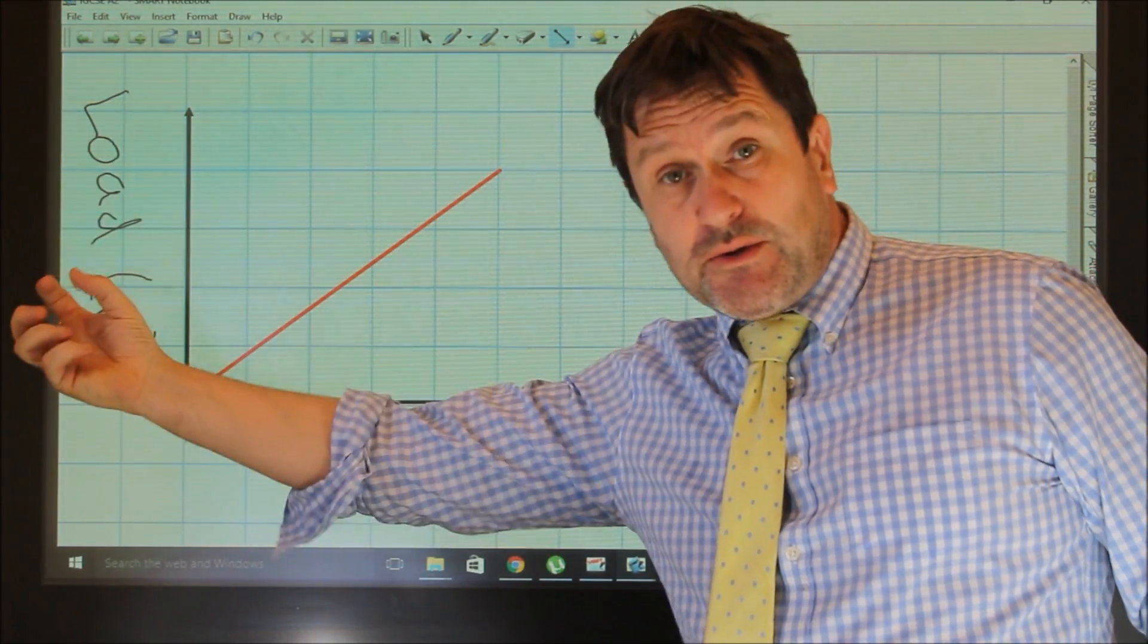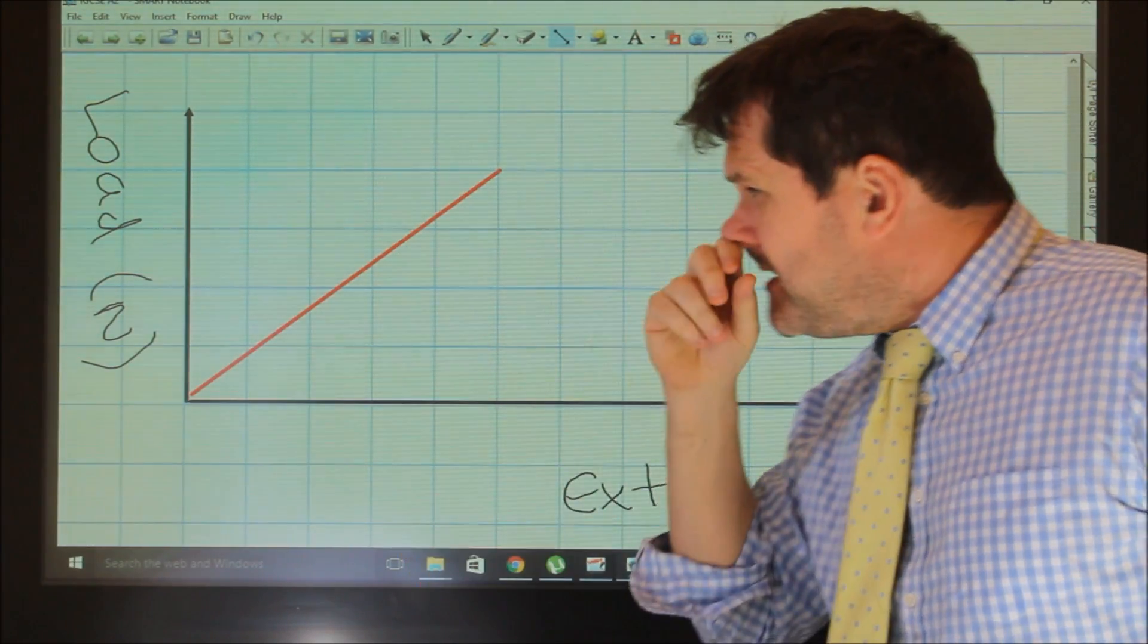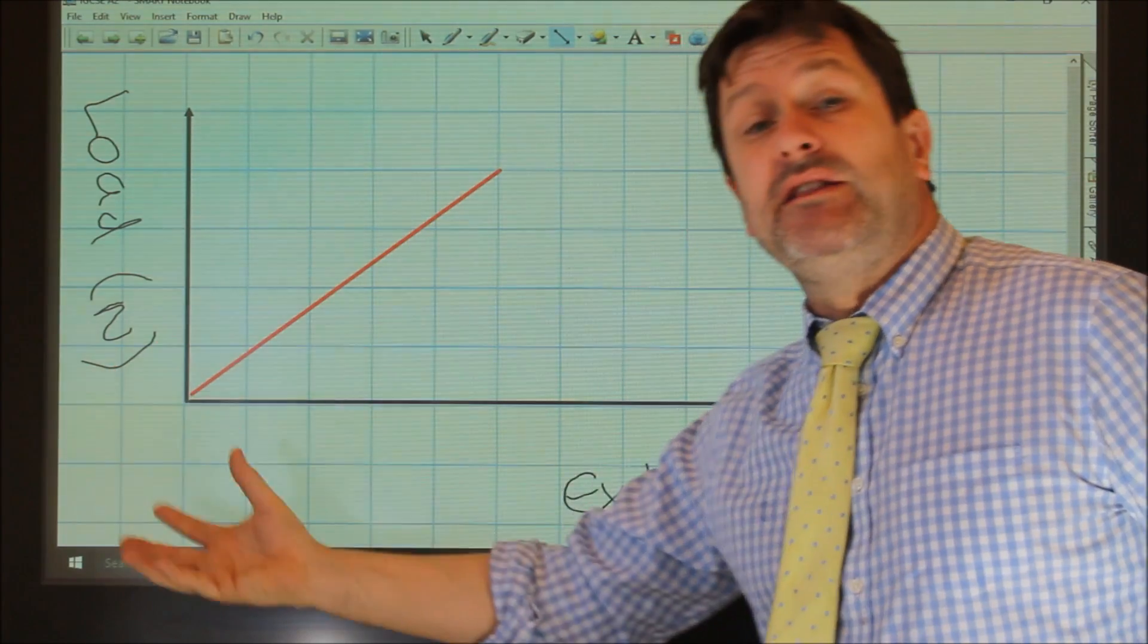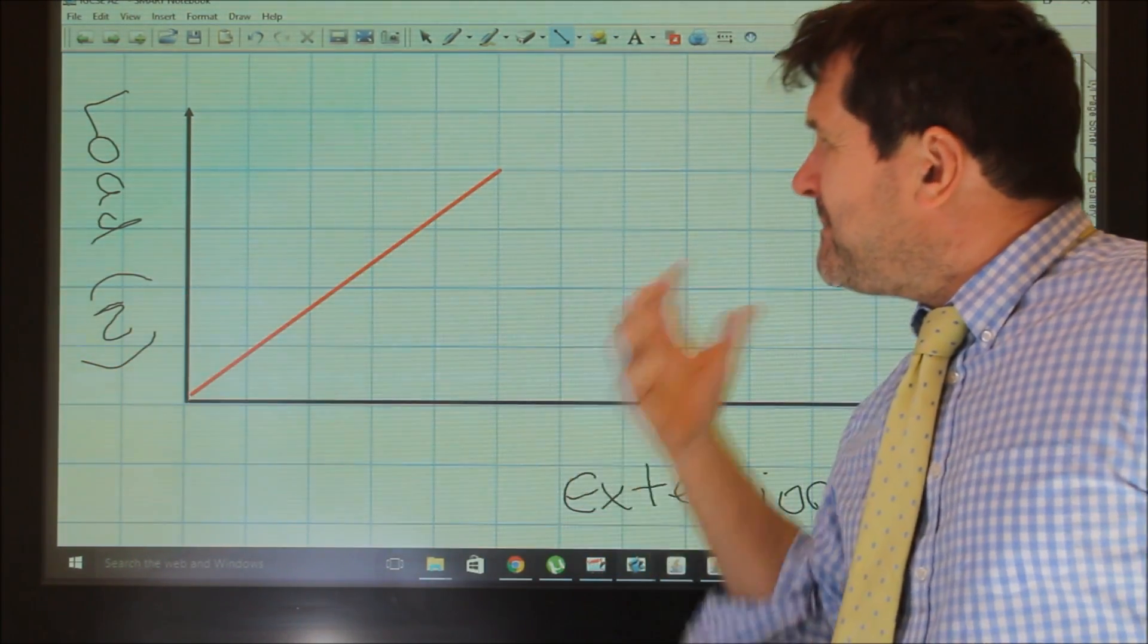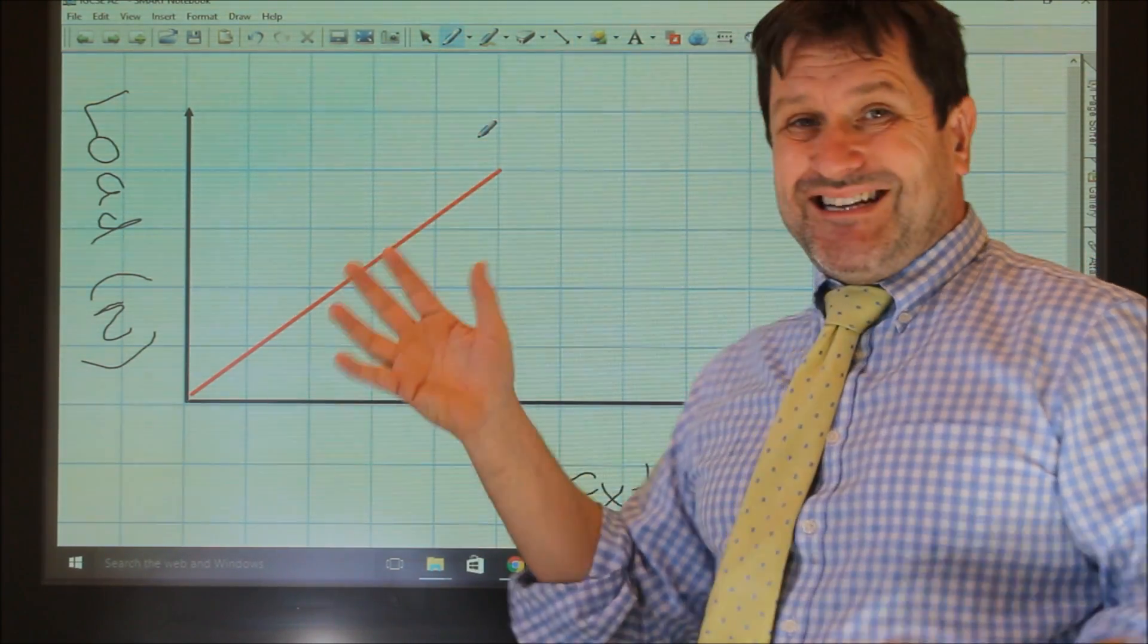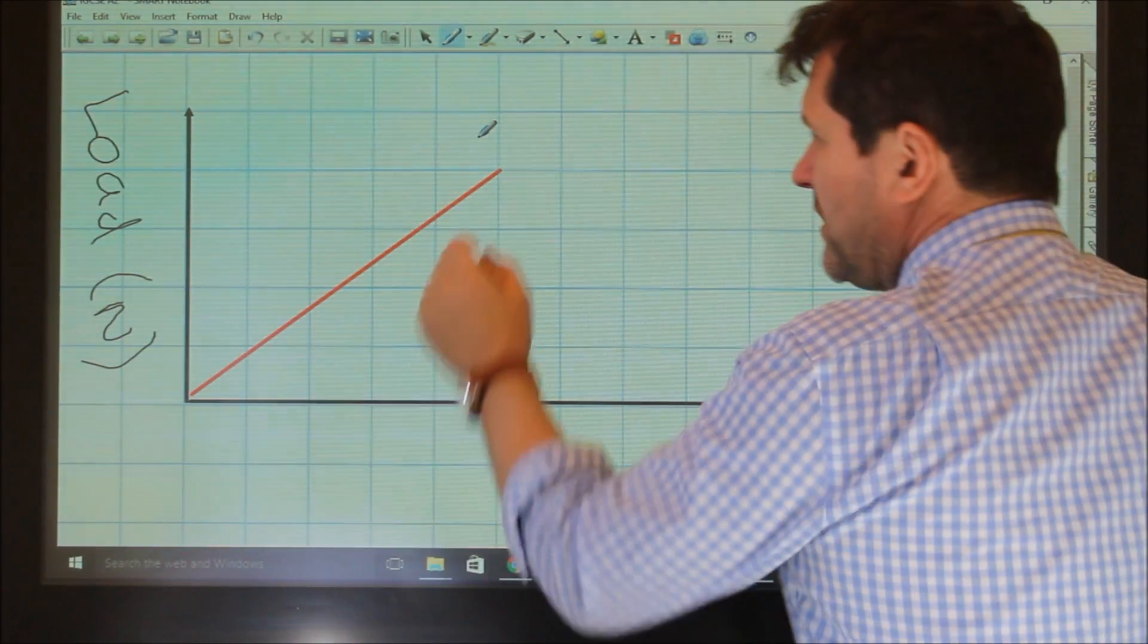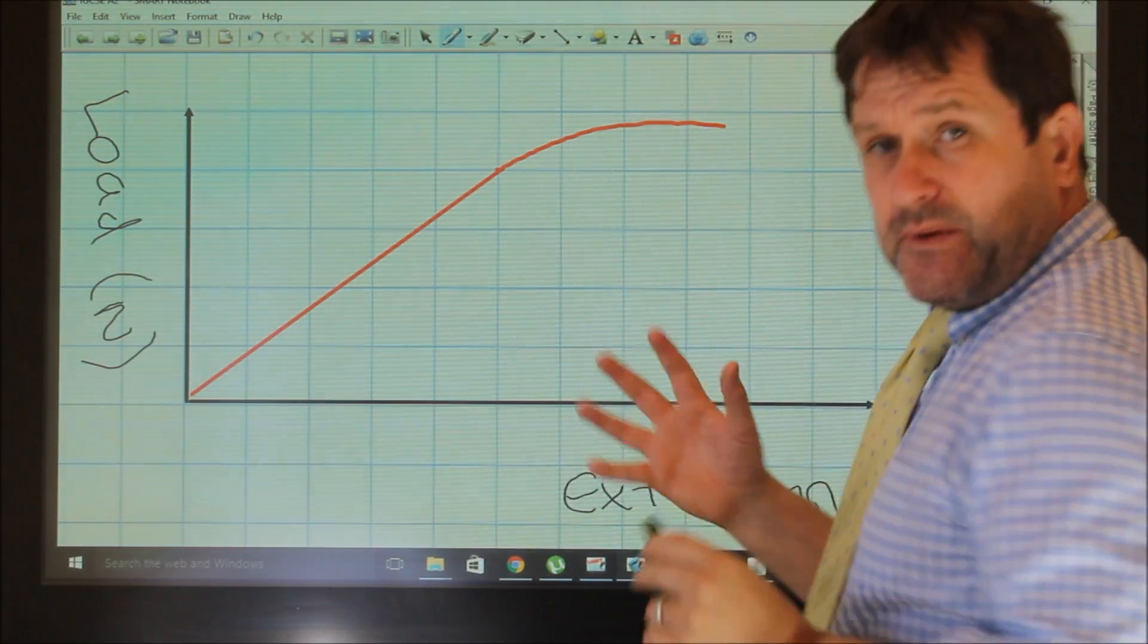The force, or the load, is proportional to the extension, and that means if you put one newton on it, you'll get a certain extension. If you double it, the extension will double. If you put three newtons on, the extension will be three times. However, the graph does not continue in a straight line indefinitely because you reach something called the elastic limit. When you go past the elastic limit, the graph will curve.